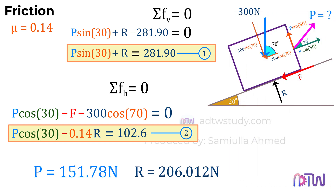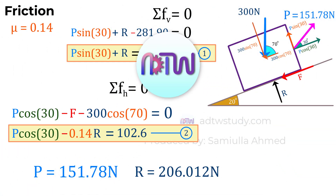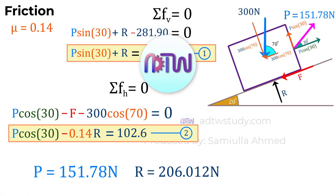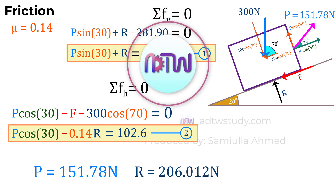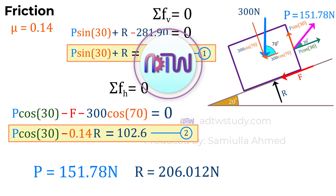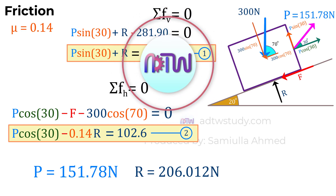Therefore, we got the value of force P acting at an angle to pull the box resting on an inclined plane. I hope this video clarifies how to calculate the forces required to pull the object. In my next video, let's see different variations of this problem. If you liked my video, click the like button and support my work by sharing it with your friends. The more people watch my videos, the more motivated I will be to create high-quality content for you. Thank you for watching till the end.